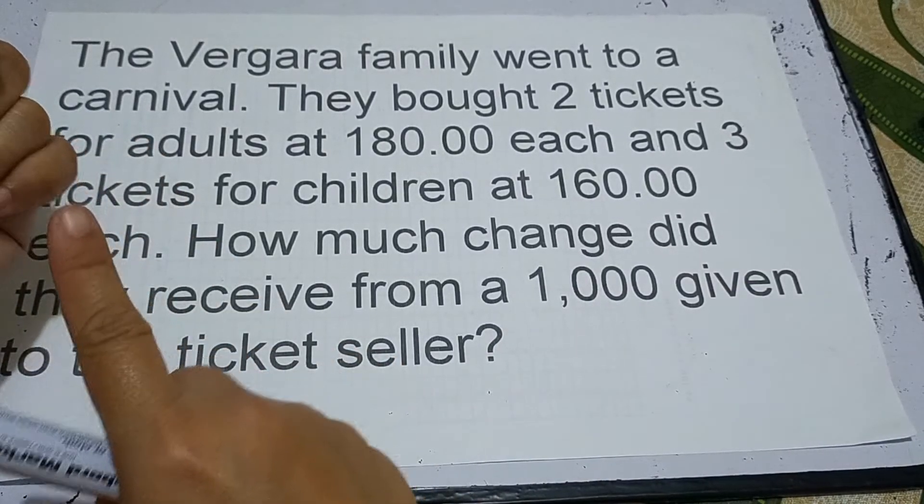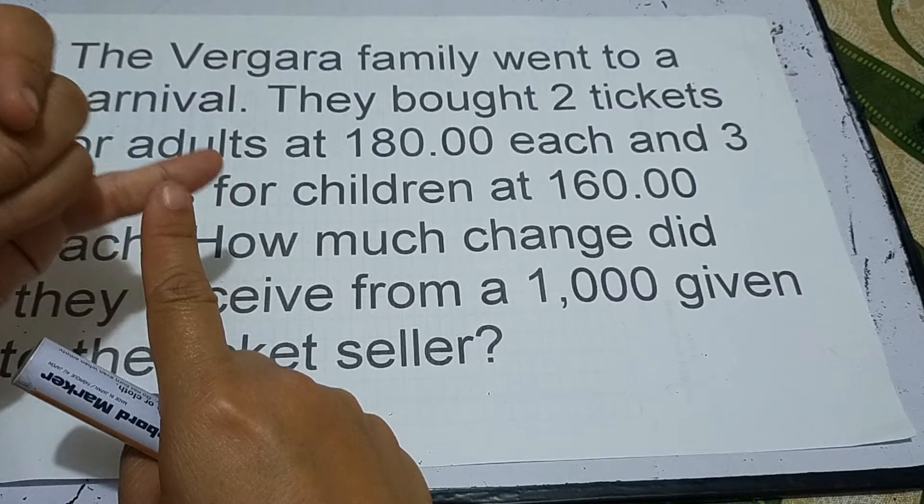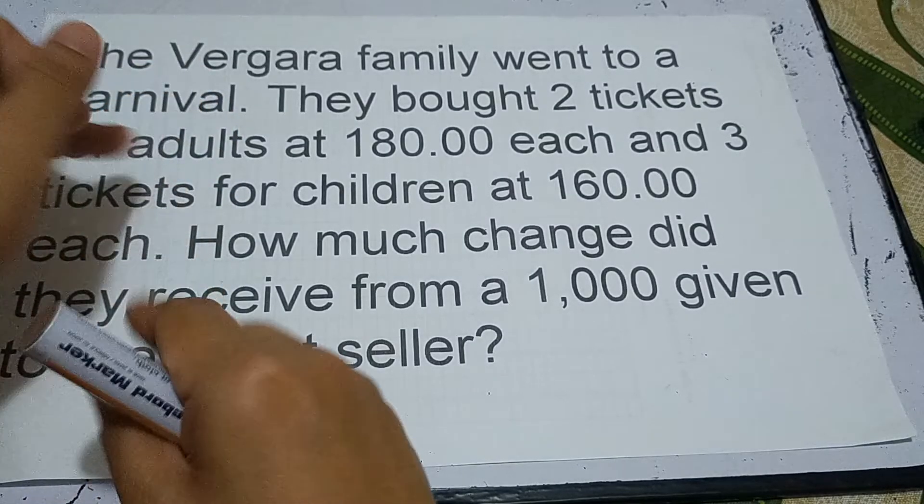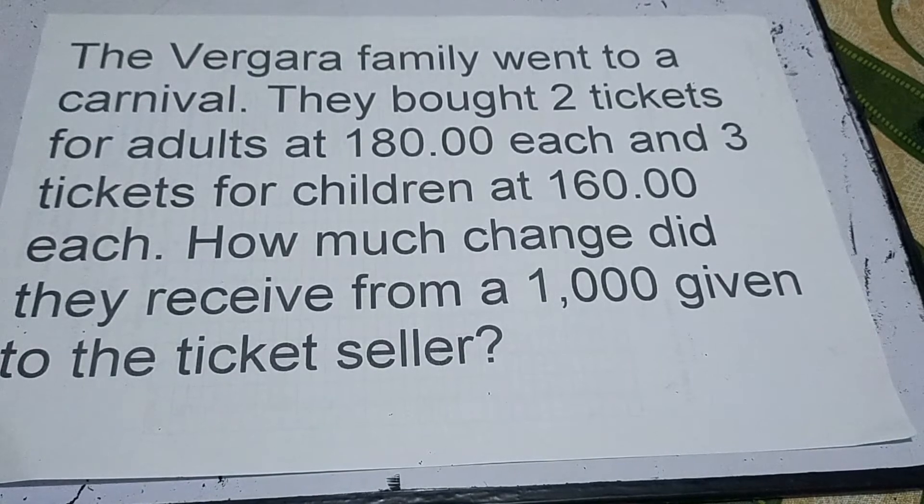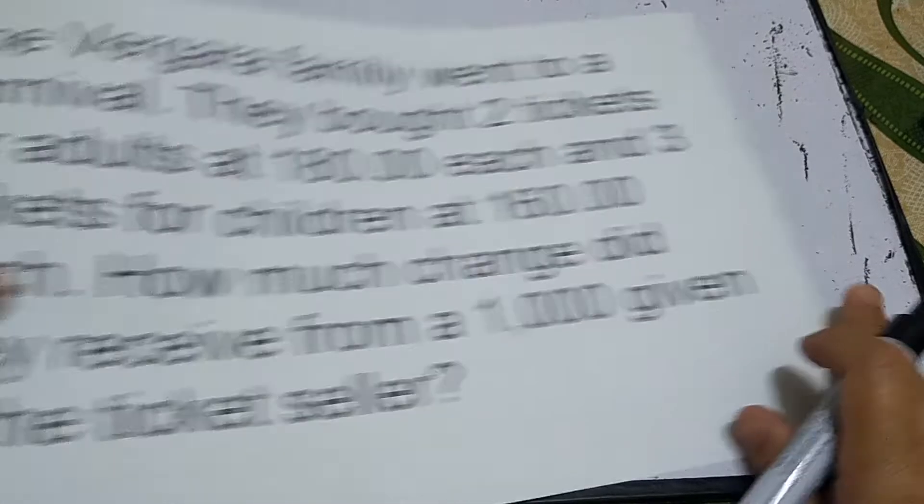What are given? The given are: two tickets at 180 pesos, three tickets at 160 pesos, and 1,000 pesos. Next is plan. Under plan, what operation will we use? Looking at the problem, it's not just one operation. What operations can we use? You'll subtract and then add. Let's look at the number sentence to know what operations we'll use.